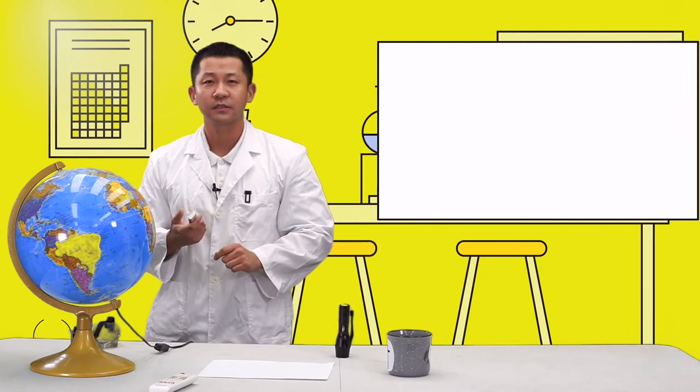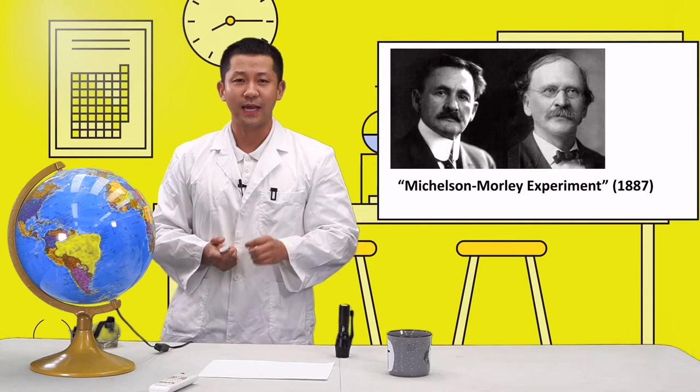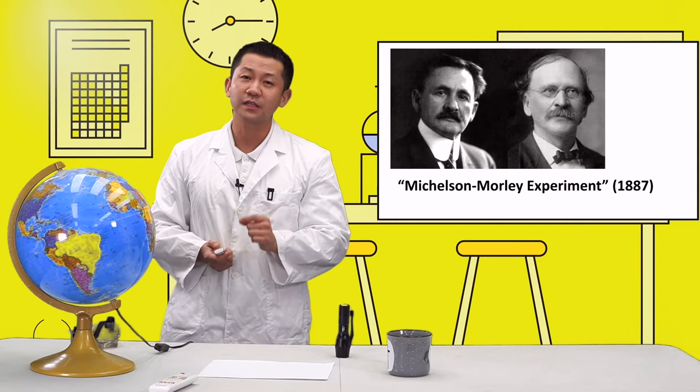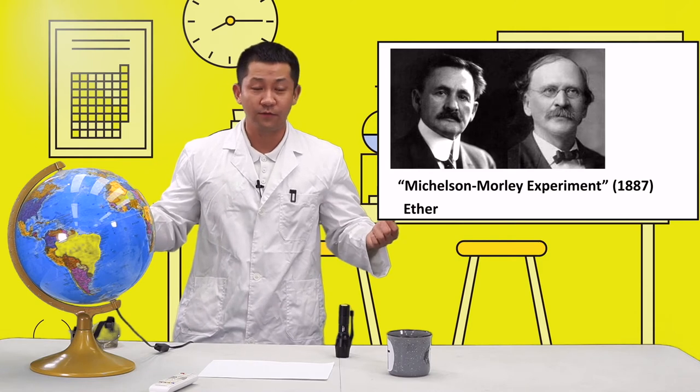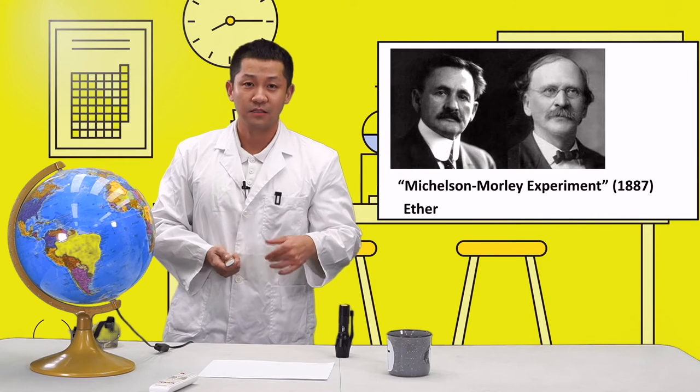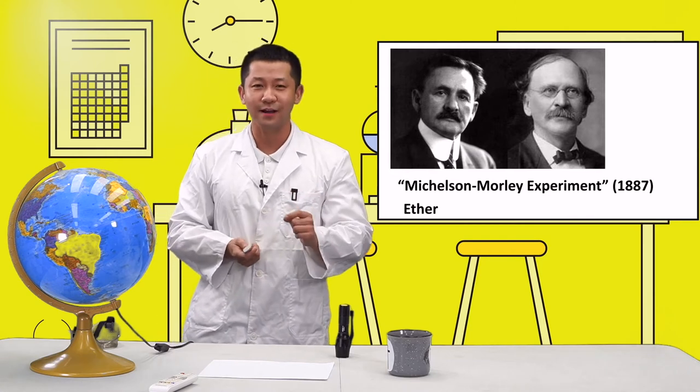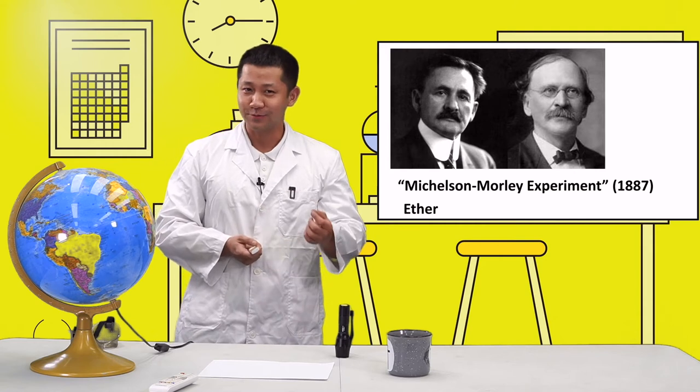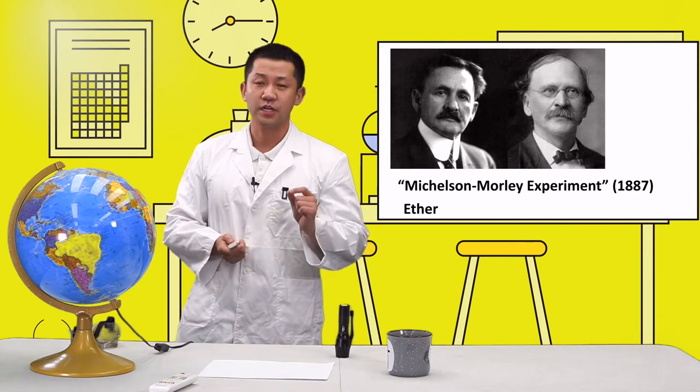This has been tested by the Michelson-Morley experiment in 1887. The original purpose was to find the aether, but they failed. The interesting thing is they realized the speed of light actually does not change. They thought it was a mistake and tested many times, but the speed of light remained constant at 300 million meters per second. In 1905, Albert Einstein's theory came out, and he confirmed the speed of light does not change. It has also been proved by Maxwell's equations.